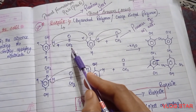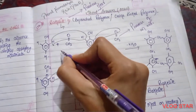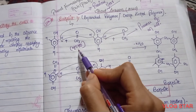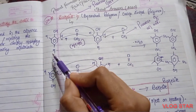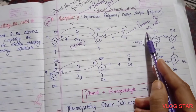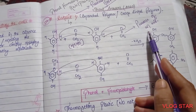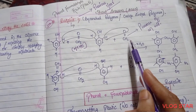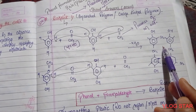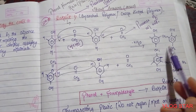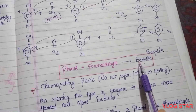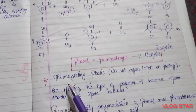Formaldehyde molecule ko HCHO likh sakte hai — yeh hamara formaldehyde hai aur yeh phenol hai. Jab phenol aur formaldehyde molecule acid ke presence mein react karte hain, in ka polymerization hota hai to water molecule eliminate ho jata hai aur Bakelite form hota hai. So: phenol plus formaldehyde gives Bakelite.